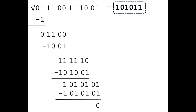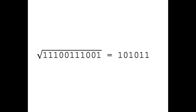To summarize, we calculated that the square root of the binary numeral 11100111001 is 101011. In decimal numerals, that would have been expressed as: the square root of 1849 is 43. Hopefully this video was helpful. Thanks for watching.